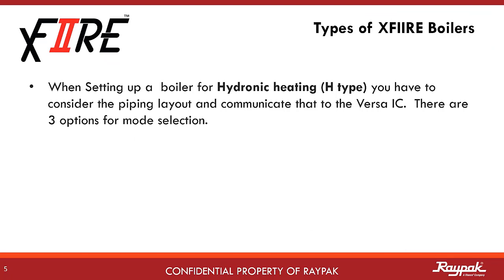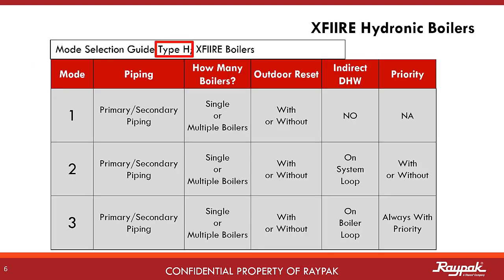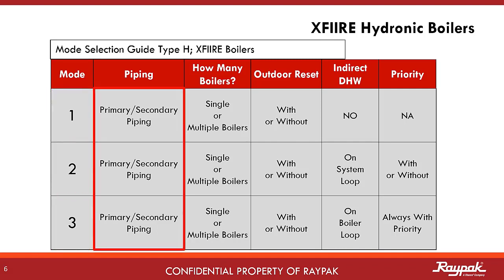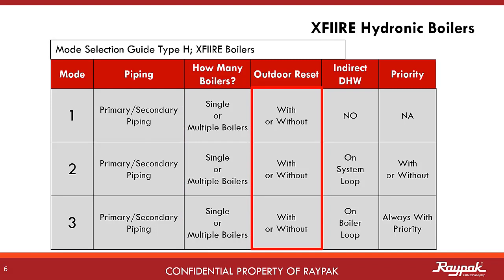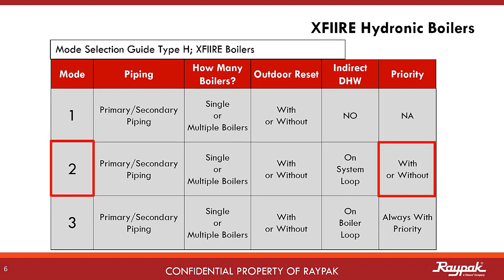When ordering a hydronic heater, there are three possible ways to set it up. These are called modes and are effectively operating programs for the boiler. If the appliance has a water heater ID card, then it is a water heater and there is only one mode of operation. For hydronic type boilers there are three modes — Mode 1, 2, and 3. All must be plumbed primary-secondary as the X-Fire boilers are low-mass. All three modes can be applied to single or multiple boilers and all can run with or without outdoor reset. If there is no indirect, then it is Mode 1. If there is an indirect system on the system loop, then it is Mode 2. If the indirect is on the boiler loop, then it is Mode 3. Mode 2 can be run with or without priority, while Mode 3 is always with priority.